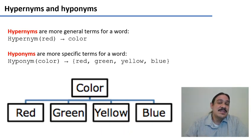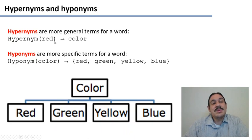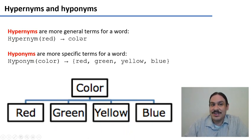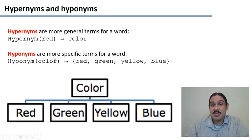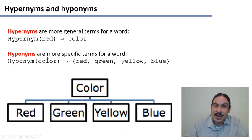Words can be connected to others by virtue of being hypernyms. A hypernym is a more general term for a word — for example, a hypernym of red is color, because red is a type of color. A hyponym is a more specific term for a word — a hyponym of color is red, and green, and yellow, and blue, because these are all types of color.